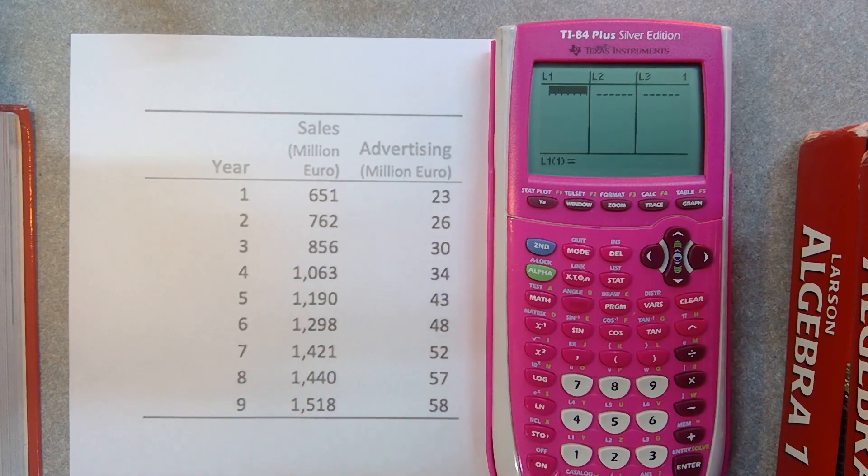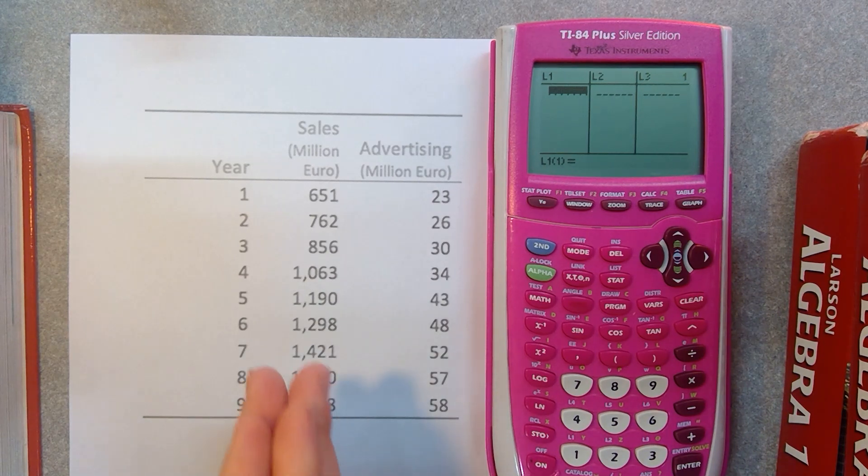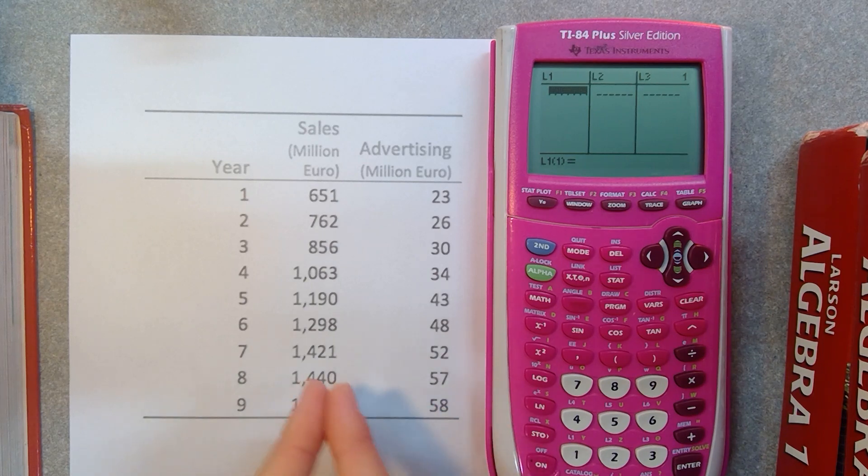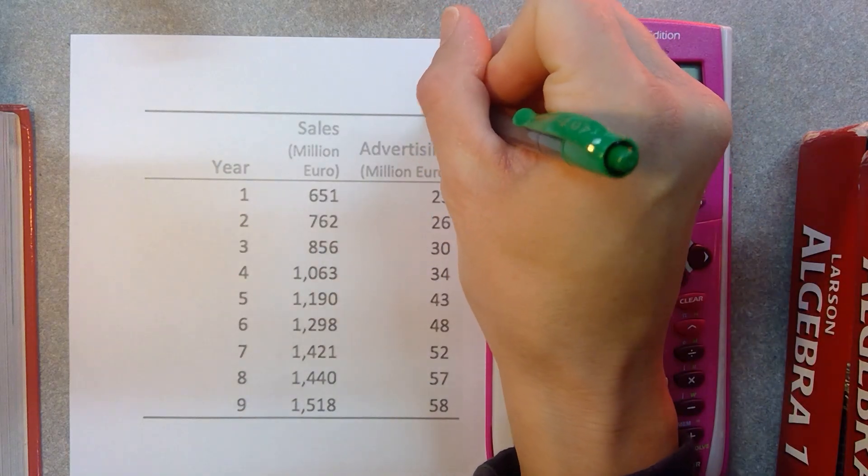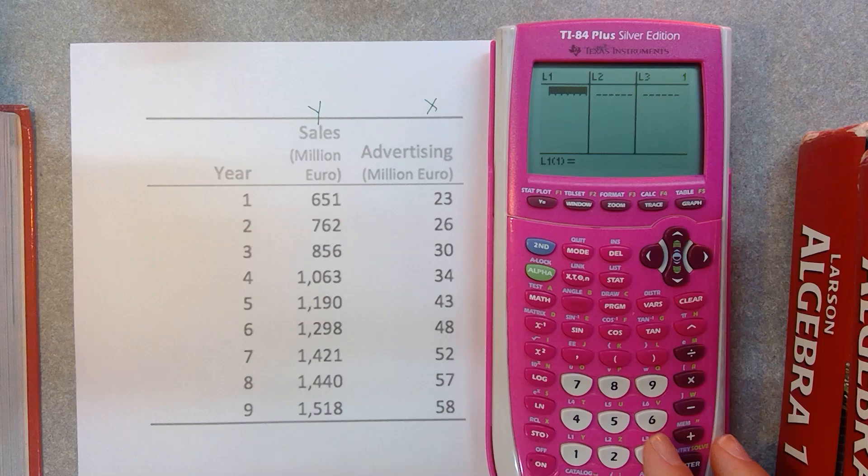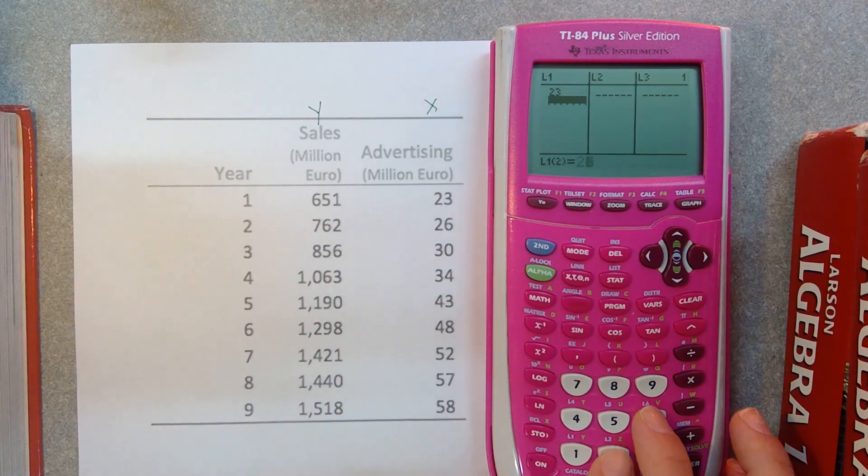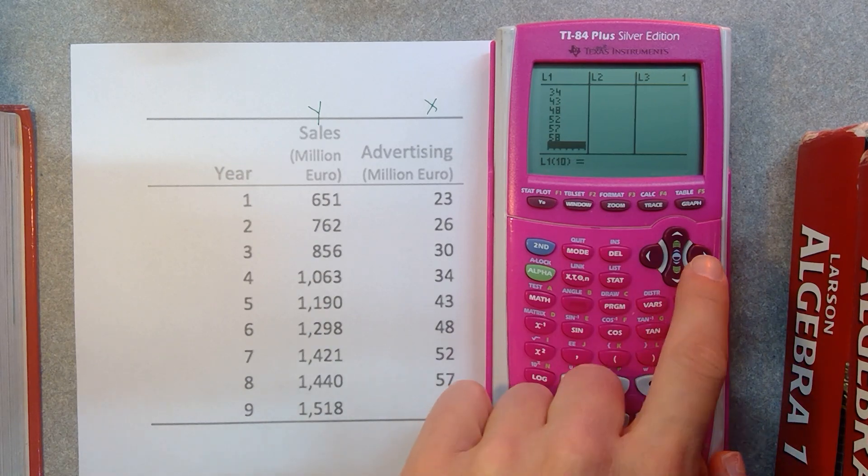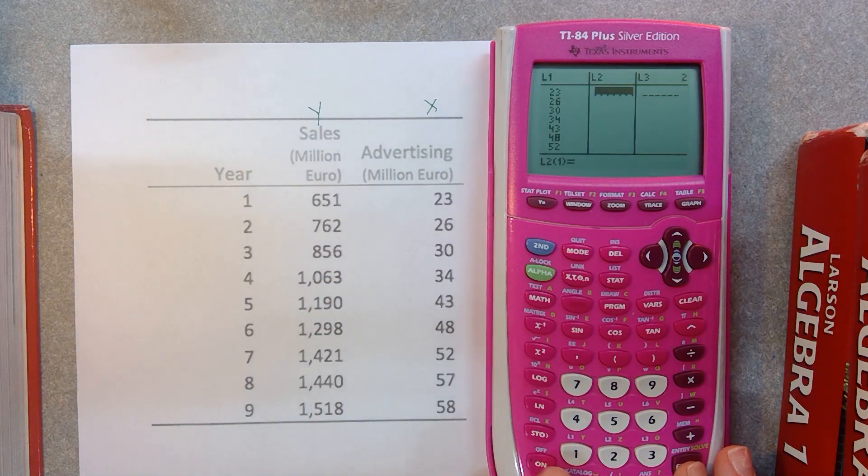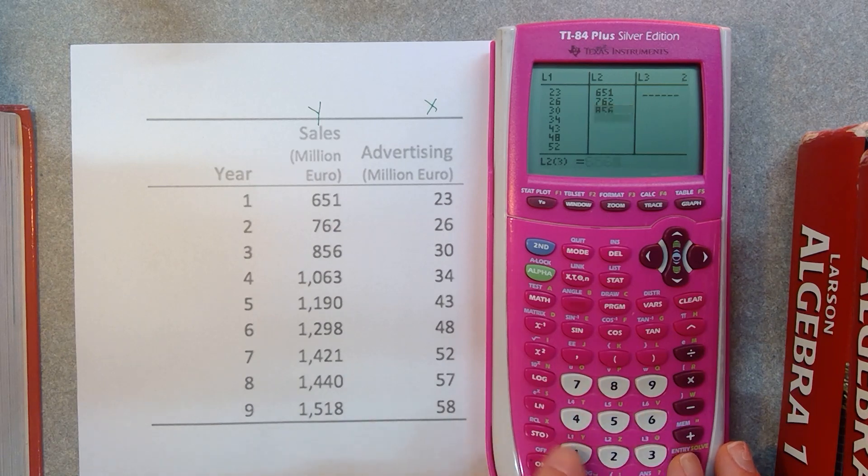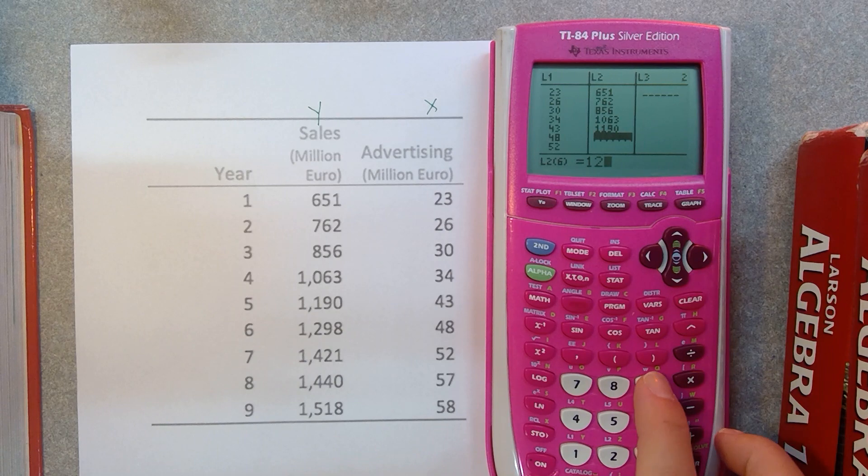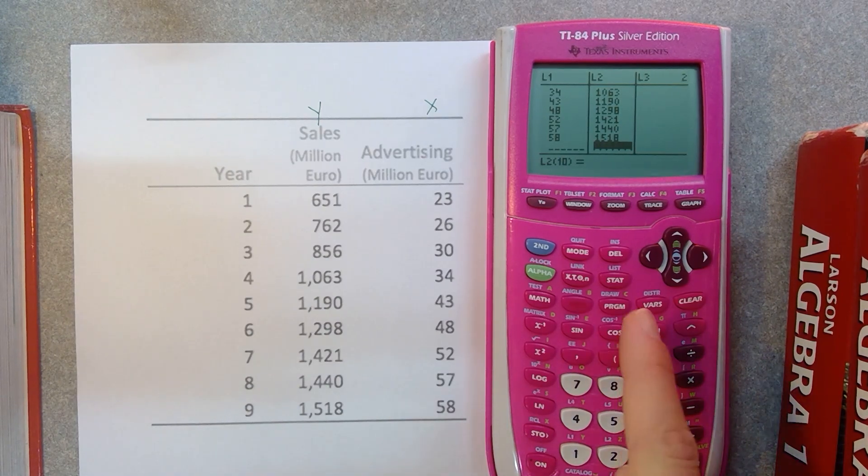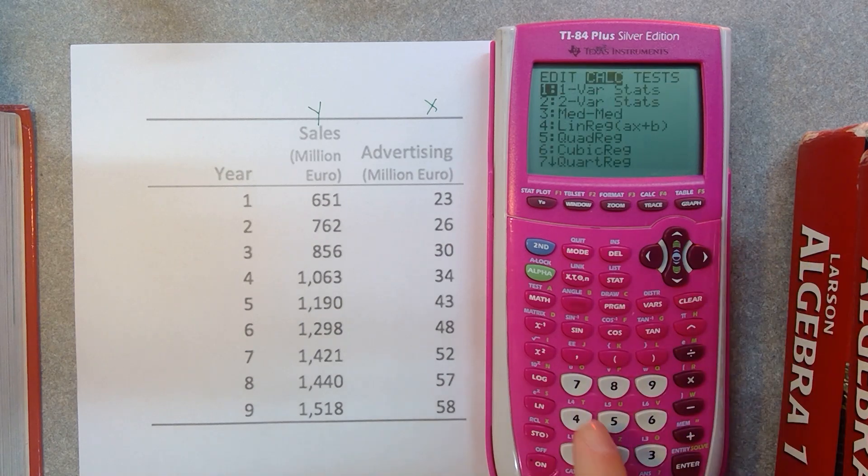If we were to think about this in terms of X and Y, which one would be the independent variable, which one would be dependent? Well, our sales would most likely depend on the amount of advertising that we do. So this might directly correlate with how this is affecting it. So our advertising is going to be our X variable, and our sales is going to be Y. So in our list 1 we want to enter the X. So we've got 23, 26. And then go over and enter your data in list 2, your sales. And voila.